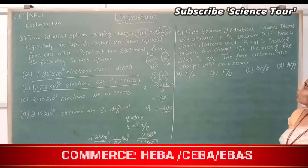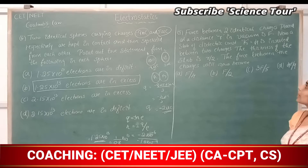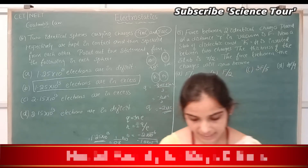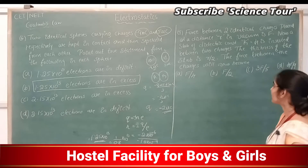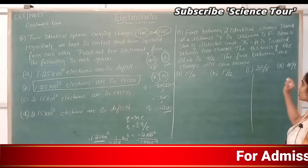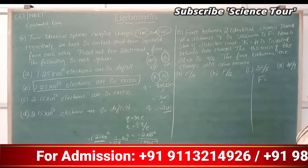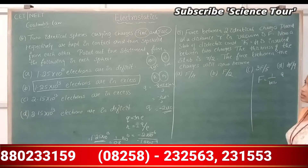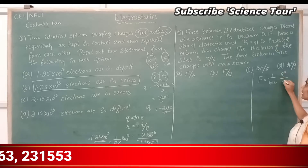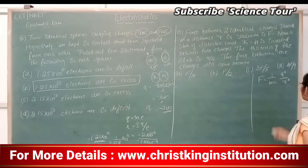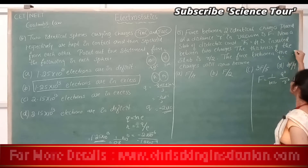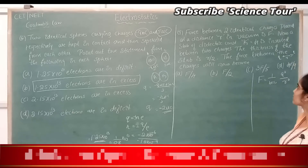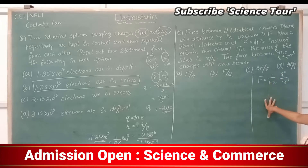Force between 2 identical charges placed at a distance R in vacuum is F. A slab of dielectric constant K = 4 is inserted between them, with thickness R/2. We need to find the new force between the charges.